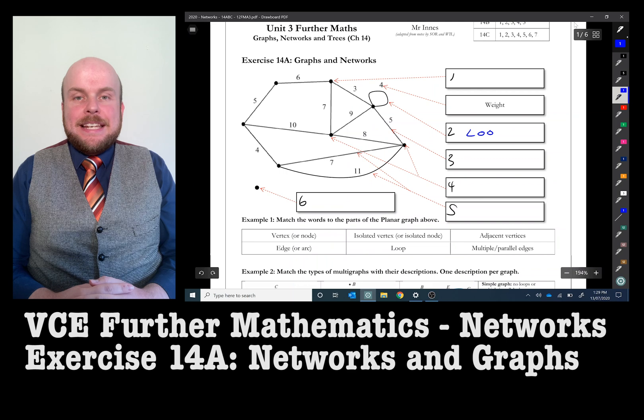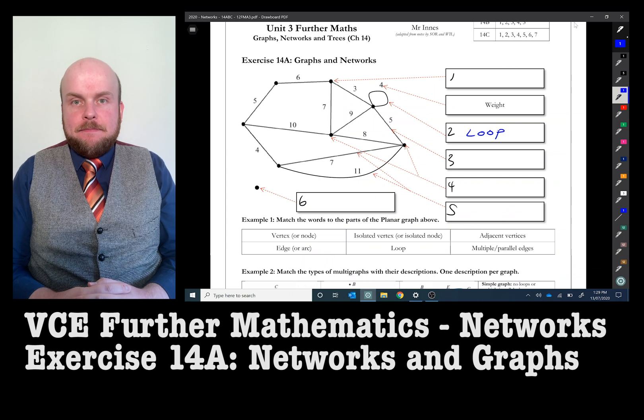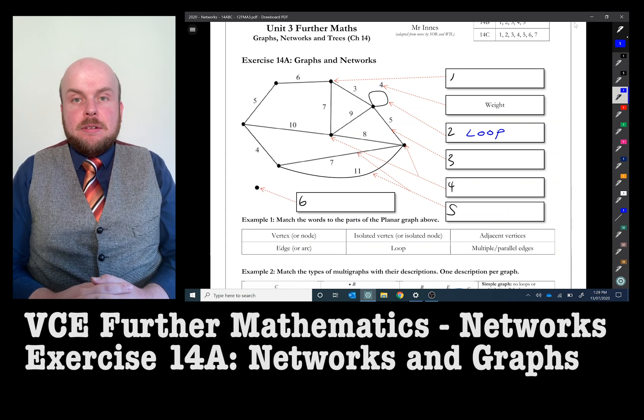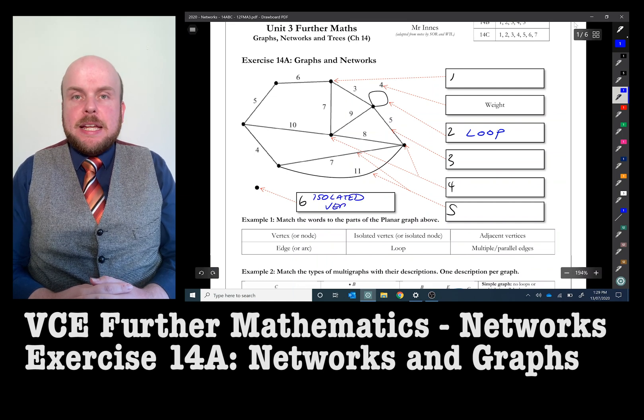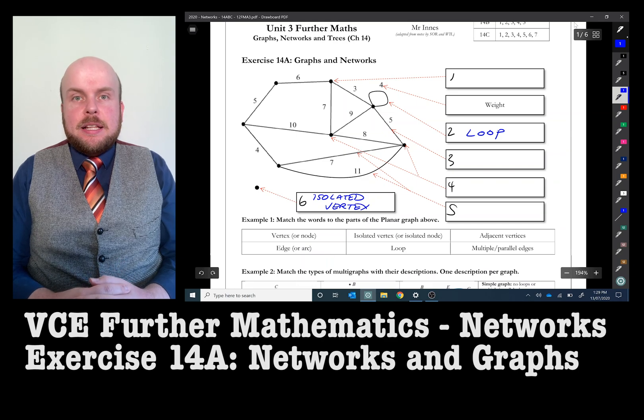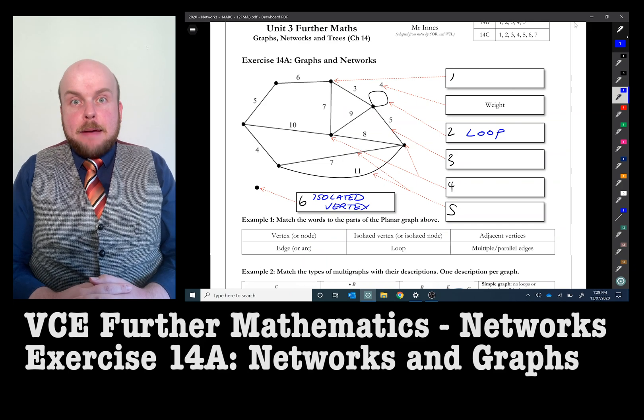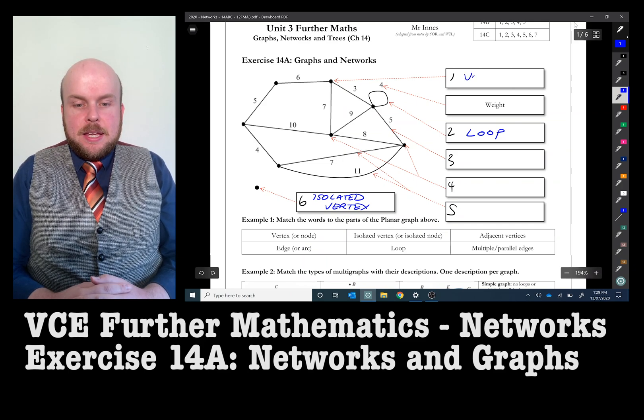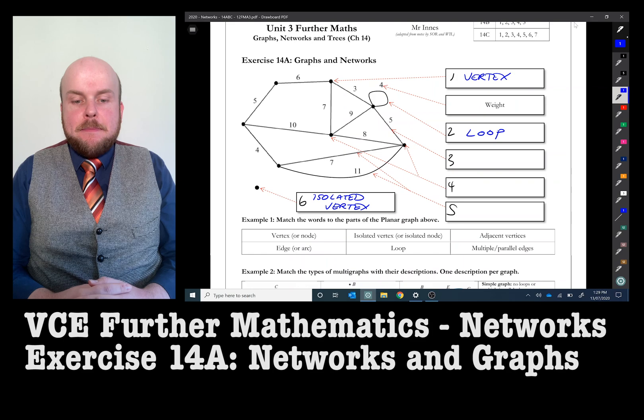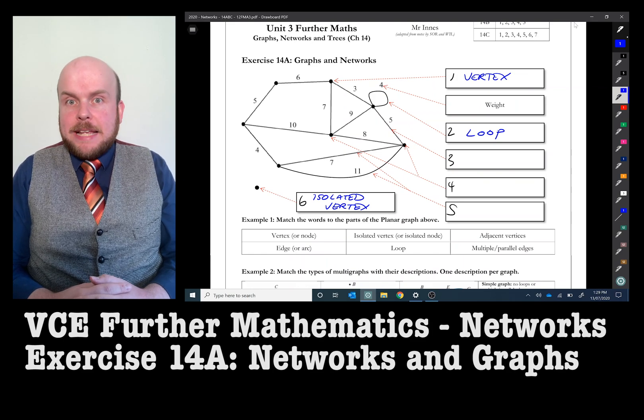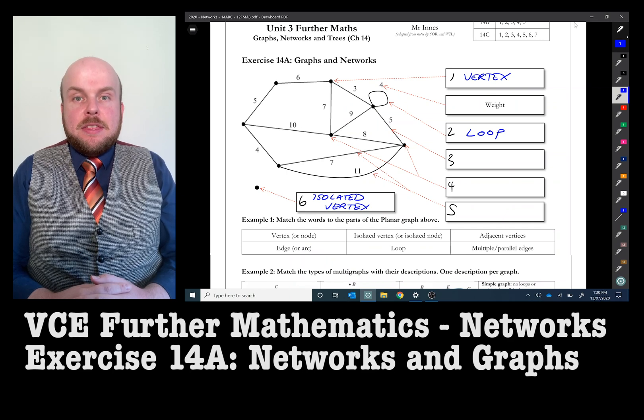A loop is a line that connects from one of those dots back to that same dot again. You can see there that I've also written there weight. Weight indicates a number that has been attached to a line and usually does not necessarily mean a kilogram or anything like that. It just means that it has some value. You can almost consider it like a map and consider its distance. We can see here an isolated vertex and a vertex are those dots on the network map. The isolated vertex being on its own, isolated meaning on its own, and a vertex is any of the other dots that are in the network graph.